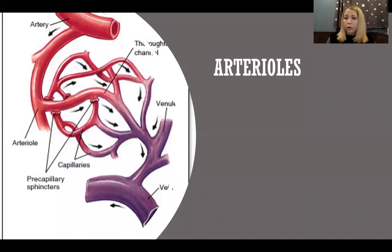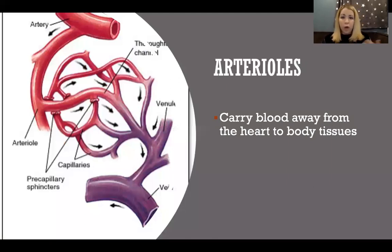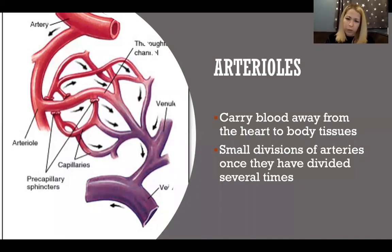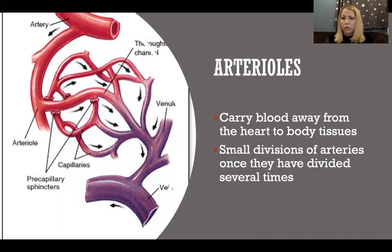Arterioles are smaller than arteries — the smallest type of artery. They're still carrying blood that originated from the heart, away from it, whether in systemic or pulmonary circulation. They are small divisions of arteries: once arteries have divided into smaller and smaller branches, they eventually become small enough to be called arterioles.